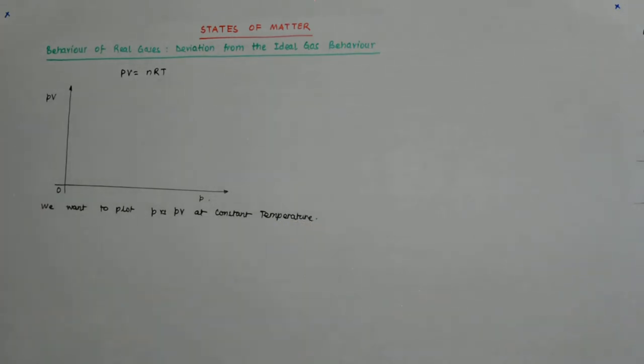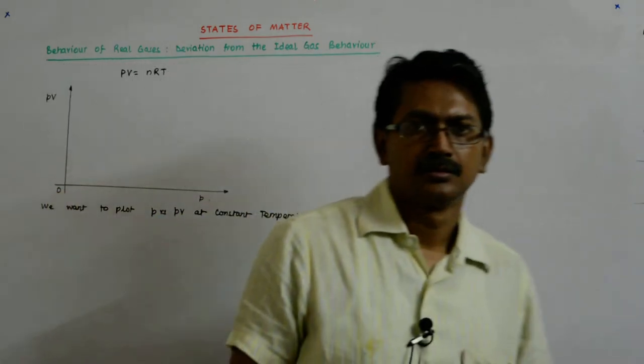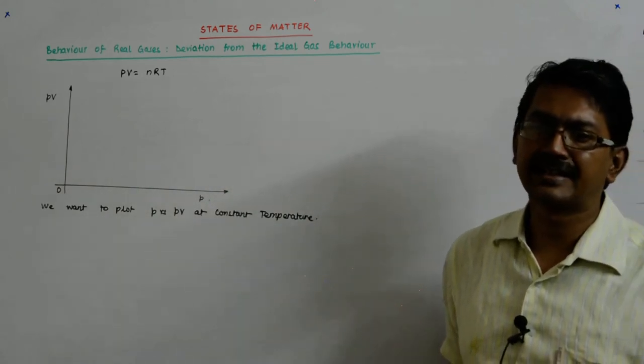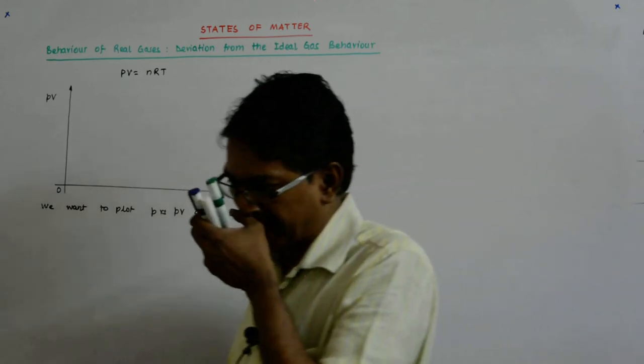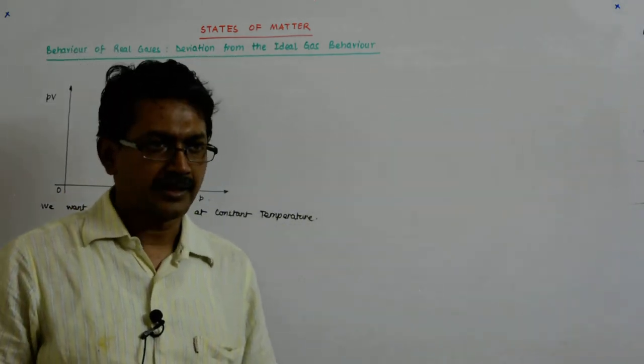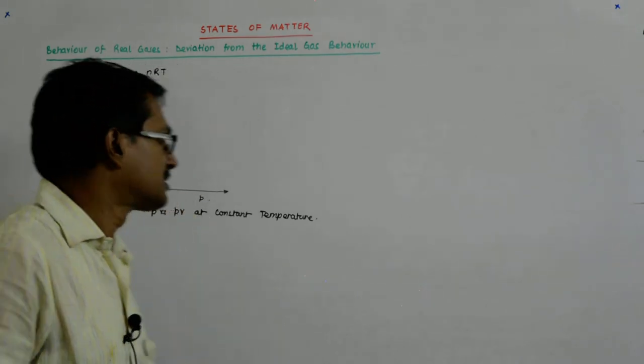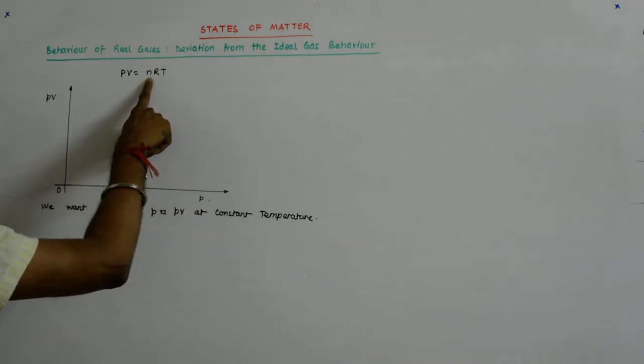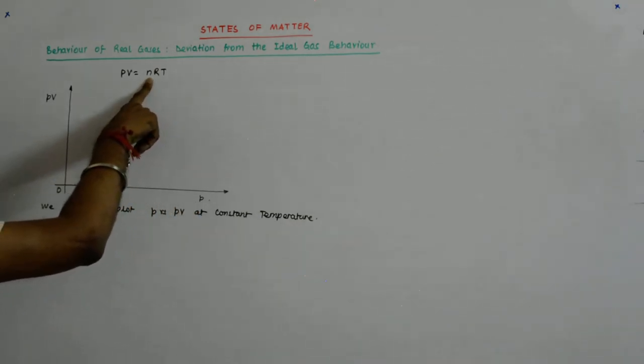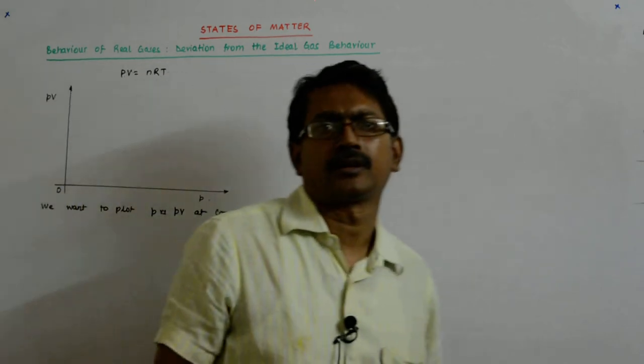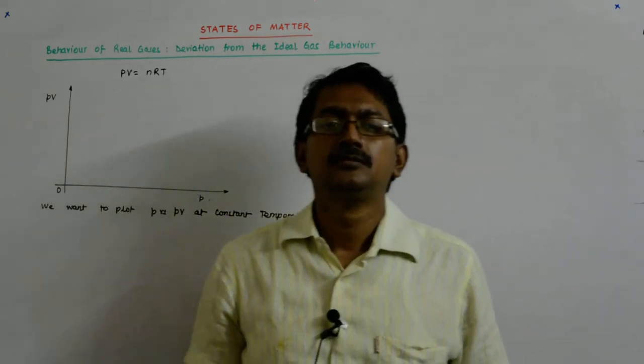Why are we plotting this? Because what do you expect for the ideal gas? What should be the value of PV for an ideal gas? It will be a constant. Why? Because T is a constant, R is a constant, and I am dealing with an enclosed container with a fixed amount of gas. So P into V is a constant. It is actually Boyle's law.